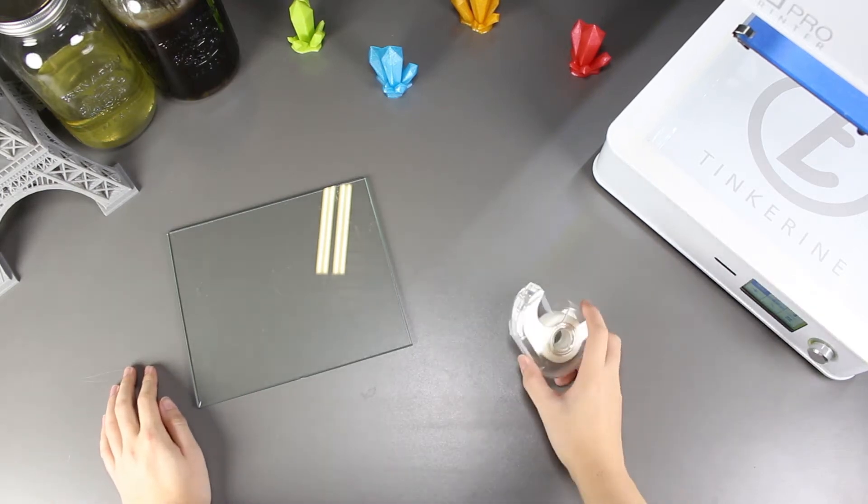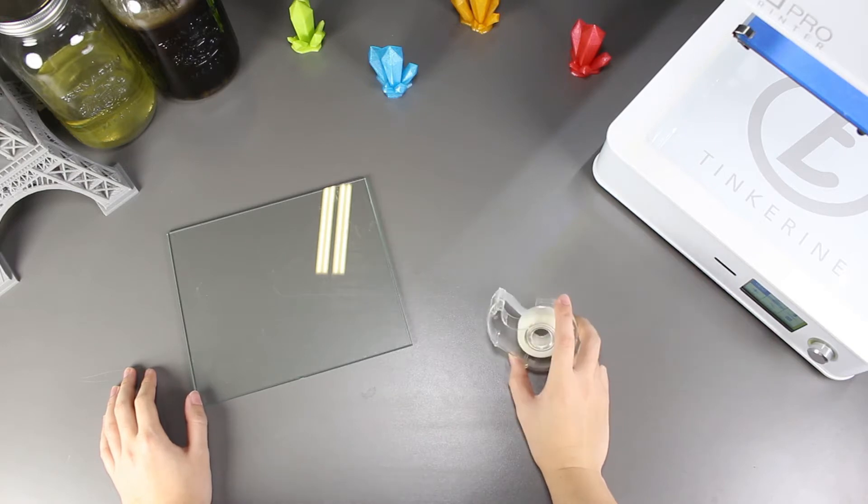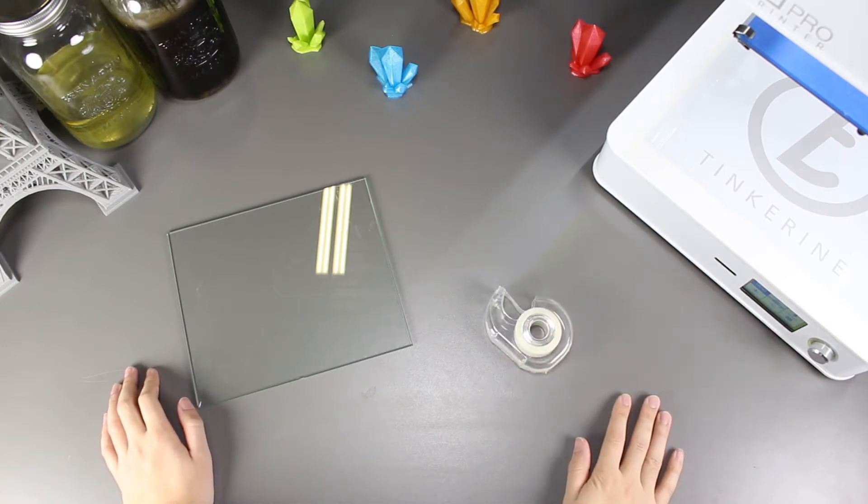Welcome to another episode of Tinkering Experiments. Today we are going to see whether or not Scotch Tape would be a good alternative to blue tape as a bed adhesive.